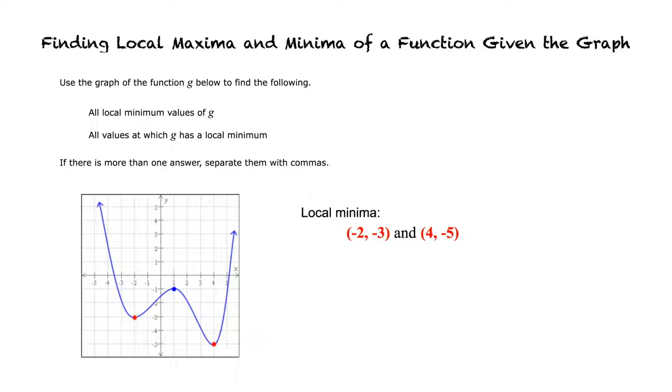The local minimum value of g is the y-coordinate of a point on the graph where there is a local minimum. So the local minimum values of g are y equals negative 3, and y equals negative 5.